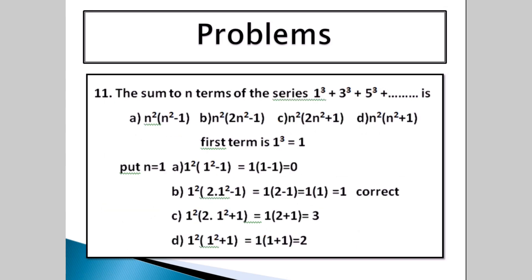Next step: sum to n terms of the series. 1 cubed plus 3 cubed plus 5 cubed plus etc. The options are: n squared; n squared minus 1; n squared into 2n squared minus 1; n squared into 2n squared plus 1; or n squared into n squared plus 1.